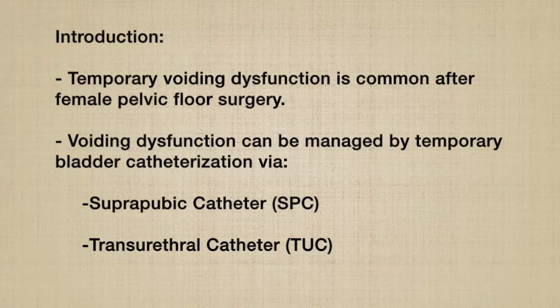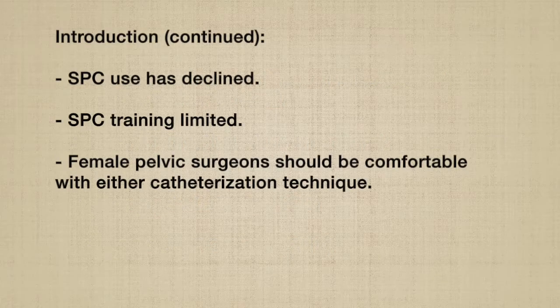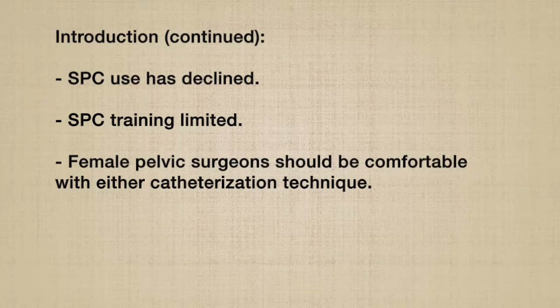Temporary voiding dysfunction is common after female pelvic floor surgery. This can be managed with temporary bladder catheterization through a suprapubic catheter or a transurethral catheter. Suprapubic catheter use has declined over time, and most mid and early career pelvic surgeons have less experience with suprapubic catheters in their training and are thus less likely to use them. As female pelvic surgeons, we should be comfortable with either catheterization technique.